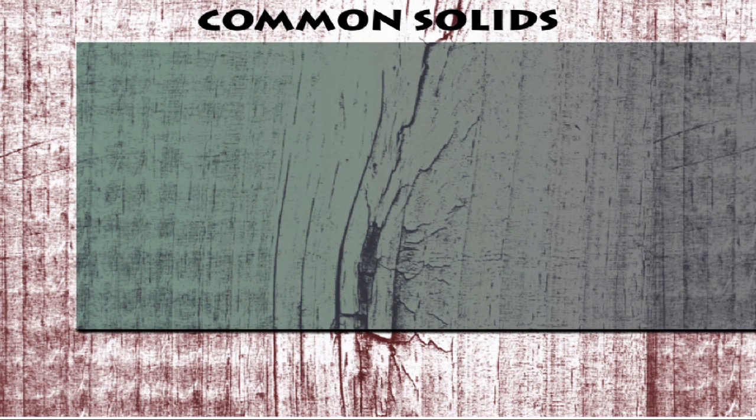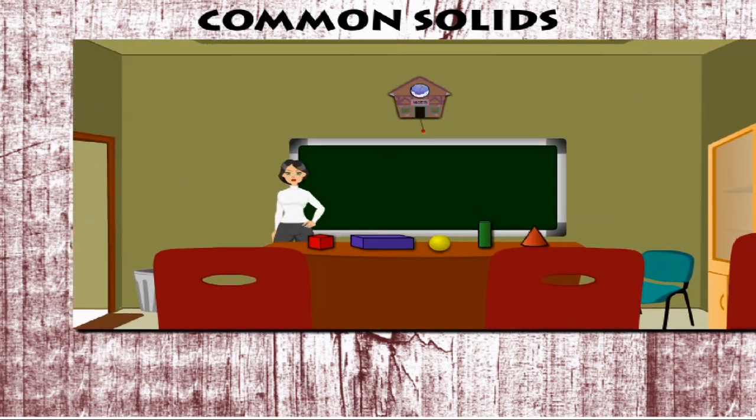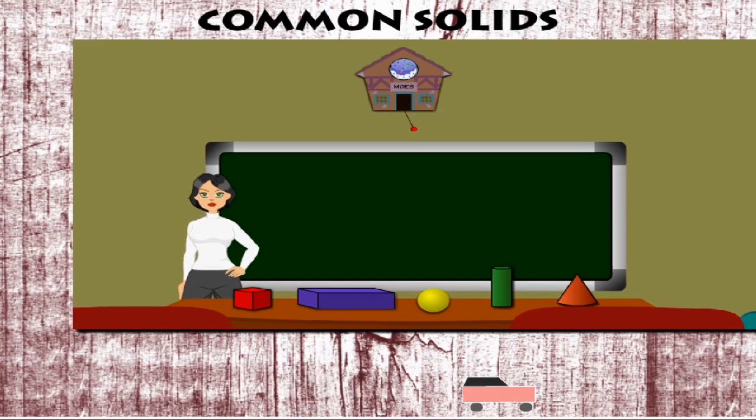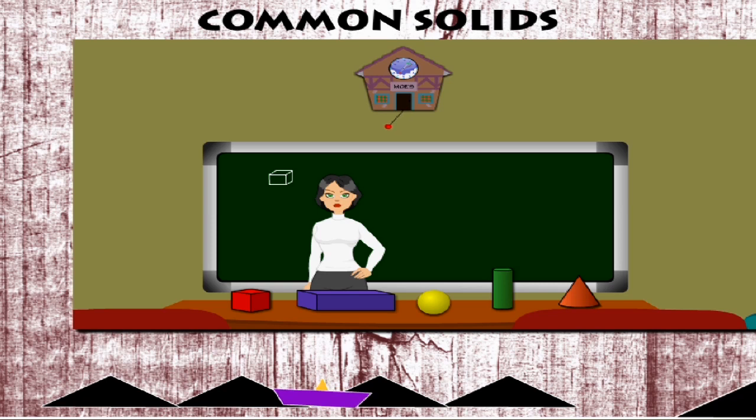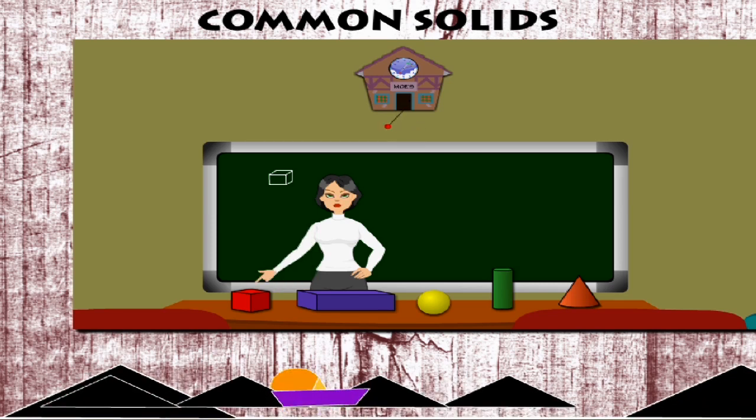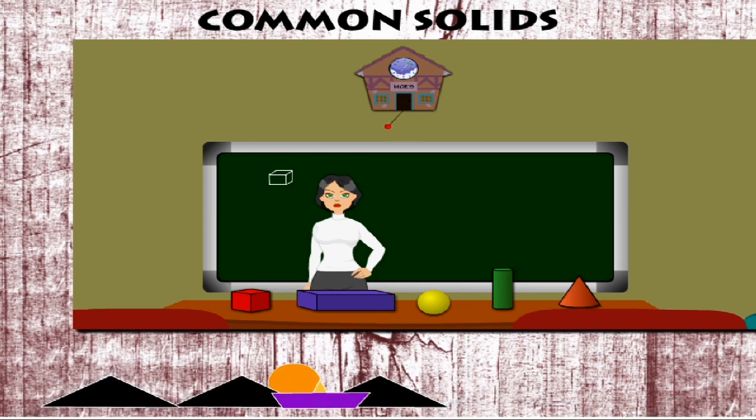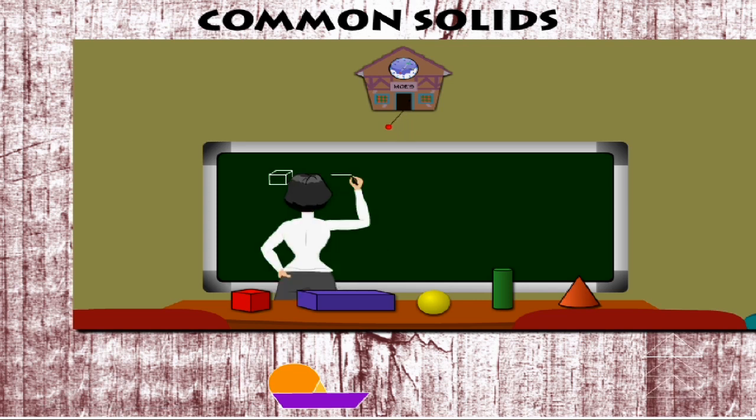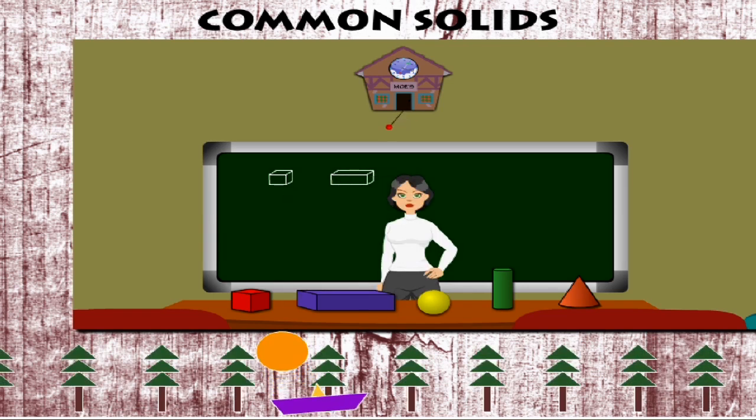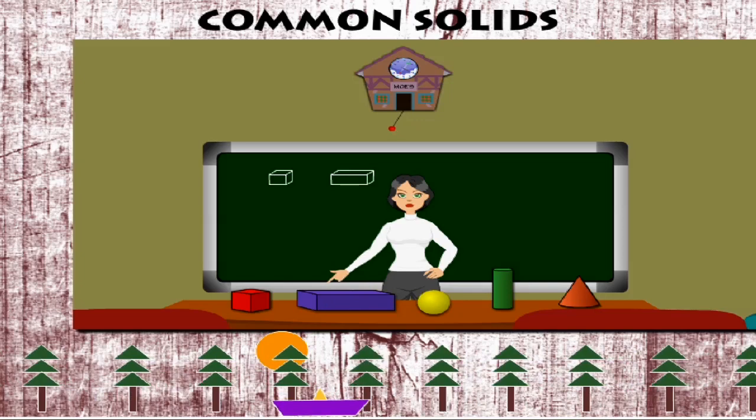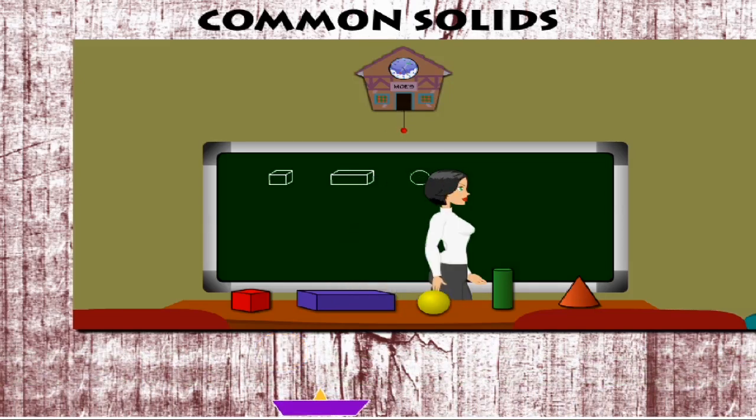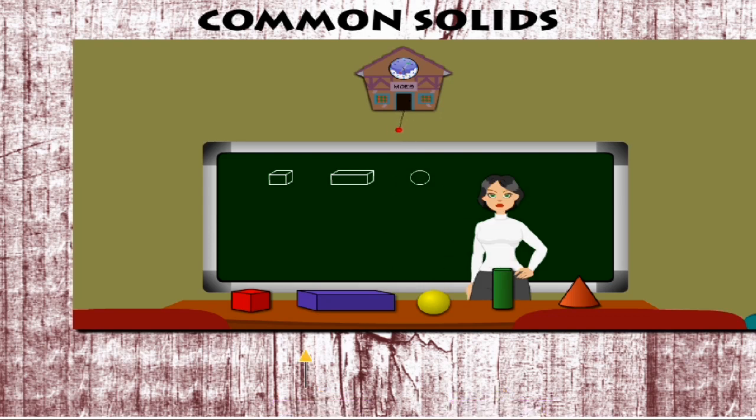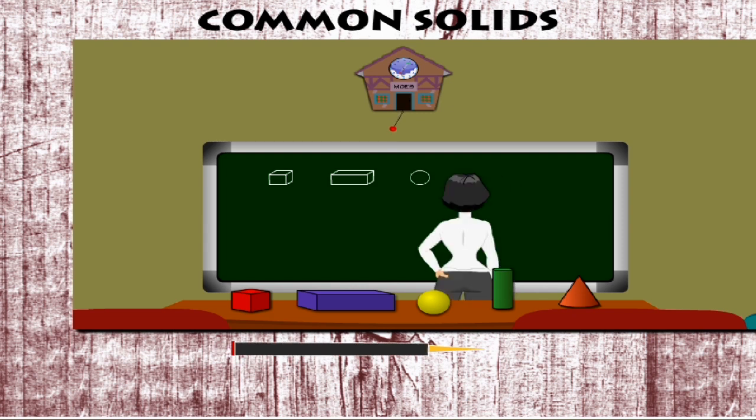Common solids. Tita Lucy is showing some solid blocks that she has on her table. She draws the shape on the board. This is a cube. It has 6 equal sides. This is a cuboid or a rectangular box with 3 pairs of equal sides. This is a sphere which is a circular ball with no sides.